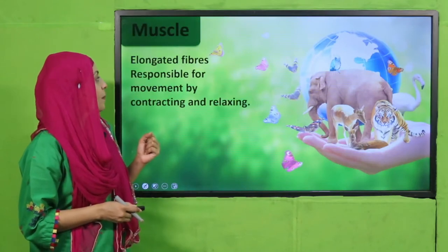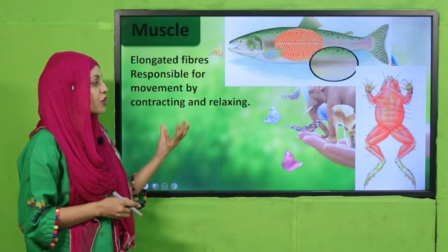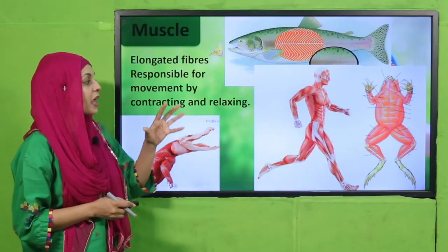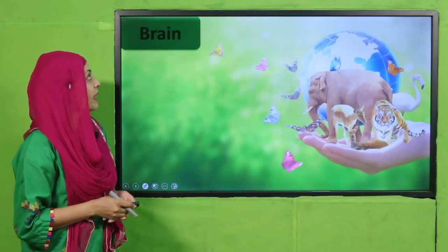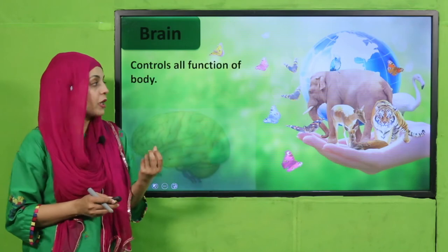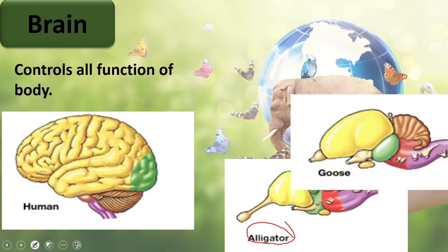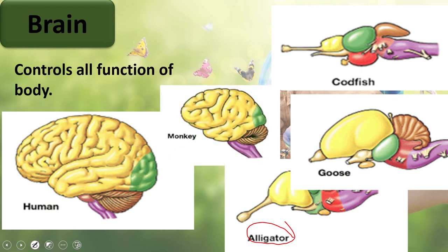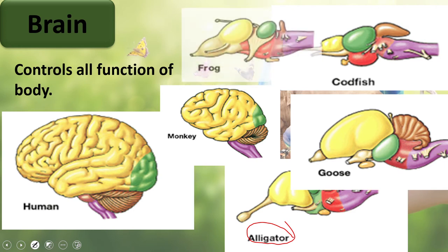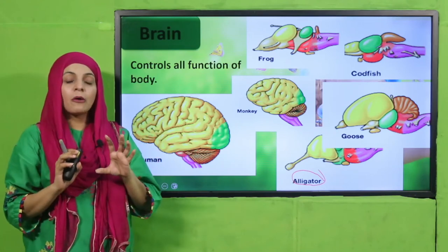Muscles are elongated fibers and they help in movement. All animals — frog, fish, lizards, crocodiles, human beings — everyone has muscles, and their basic function is to help in movement. The brain controls all functions of the body. Here we can see the brain of a human, an alligator, a goose, a codfish, a monkey, and a frog — their brains look different in shape, but every vertebrate has a brain.